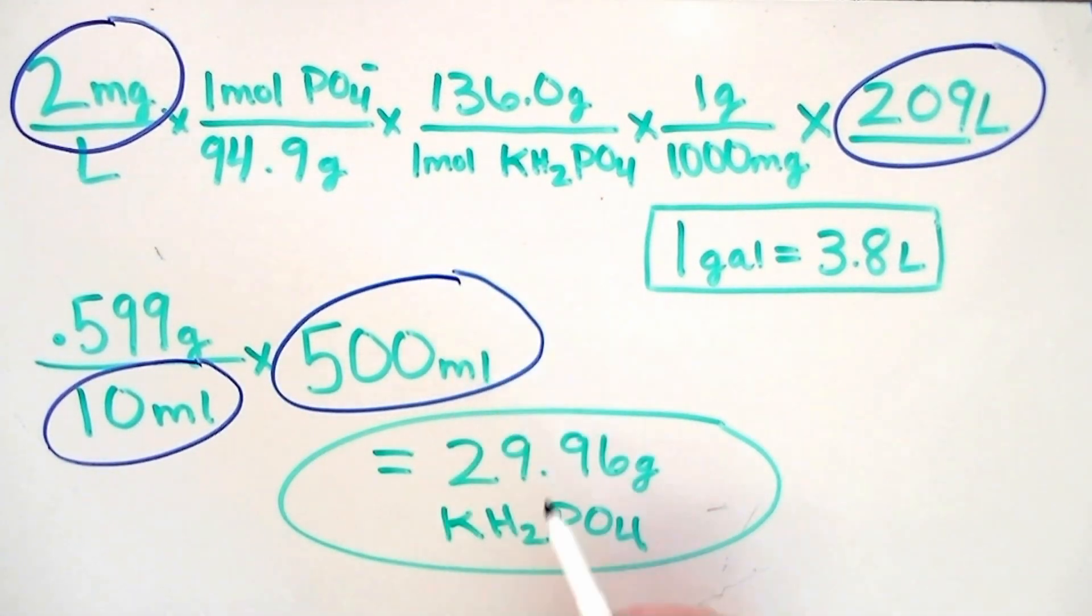The last number that's subject to change is the volume of the container you're going to house your fertilizer solution in. In our example, we're using a 500 mil bottle. If you were using a 1 liter bottle, you would put down 1,000 mils. If you don't feel comfortable doing these calculations yourself, or you want to double check your work, we've posted a link in the description to a fertilizer calculator that will do all the math for you. Now let's get back to the project and make our solution.